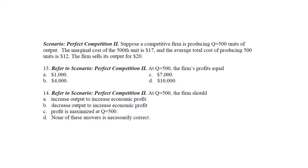So the next slide is also perfect competition. But now we have a particular firm and it says they're producing 500 units. The marginal cost of 500 units is 17. The firm's average total cost is 12, and they're selling the thing for $20. So what's the profit?